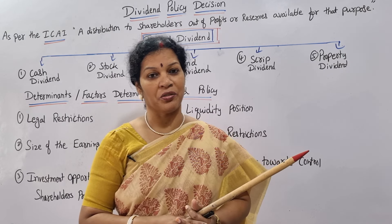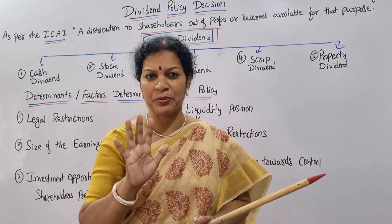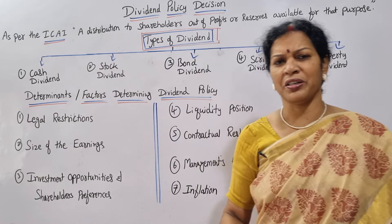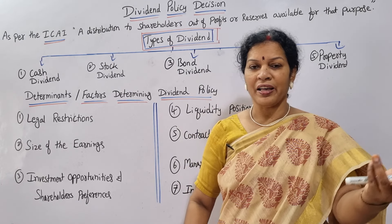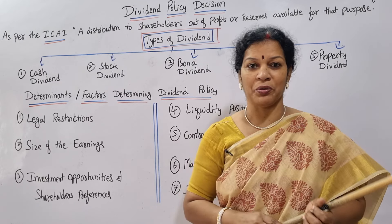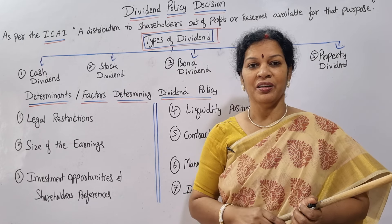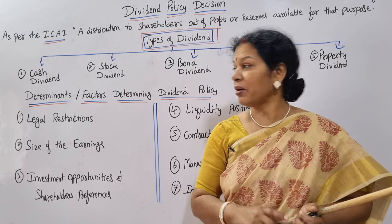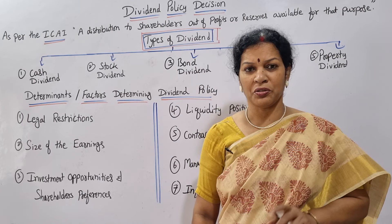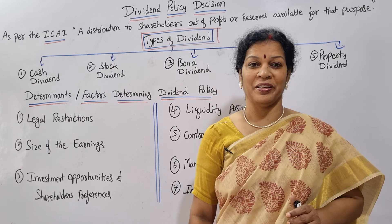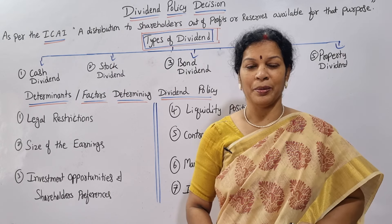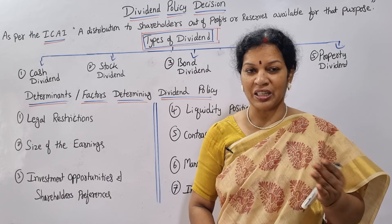Now, how many types of dividends are there? There are five types of dividend. The first one is cash dividend — very easy to understand. Cash dividend means the shareholders receive cash in the form of a check. It is always safe for the organization. Shareholders expect this method, and there is also a proof of how much dividend has been paid by the company.